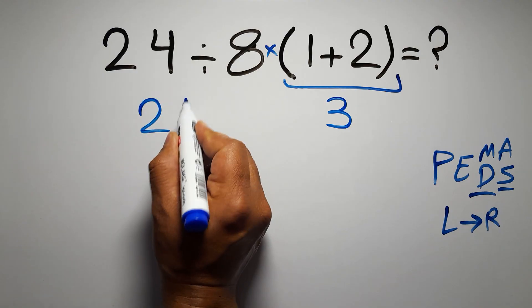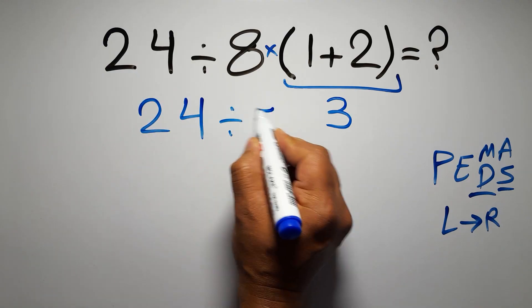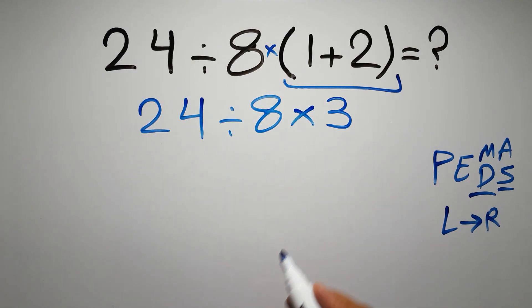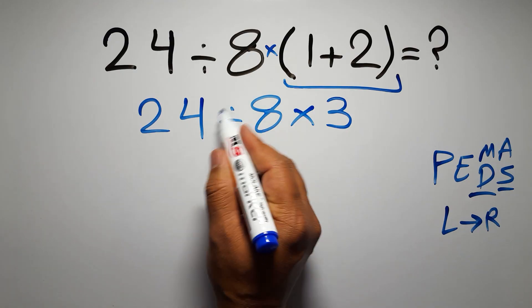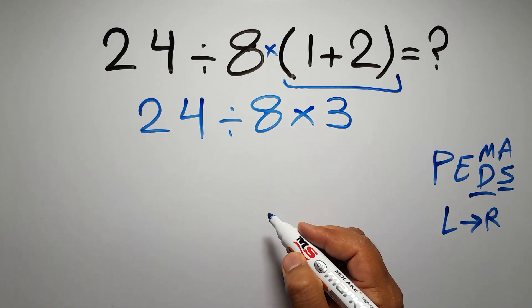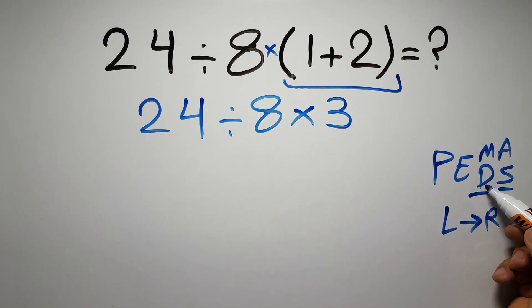So, 24 divided by 8 times 3. Now, we have 1 division and 1 multiplication. As I said, multiplication and division have equal priority, and we have to work from left to right.